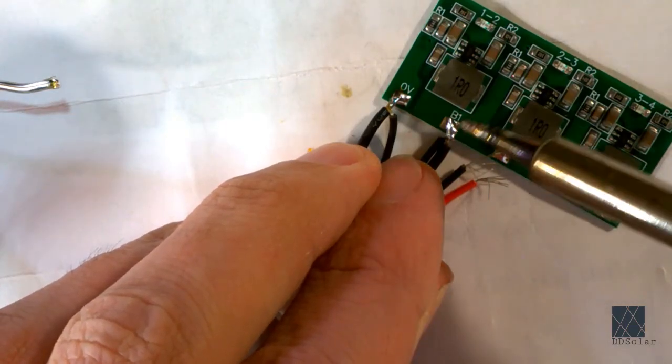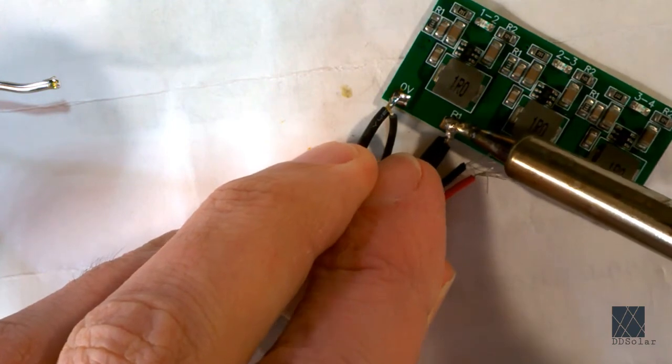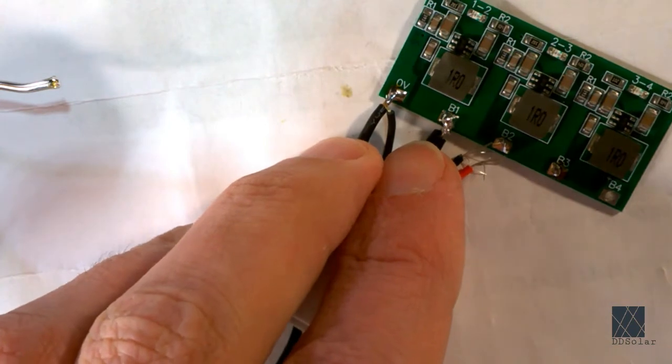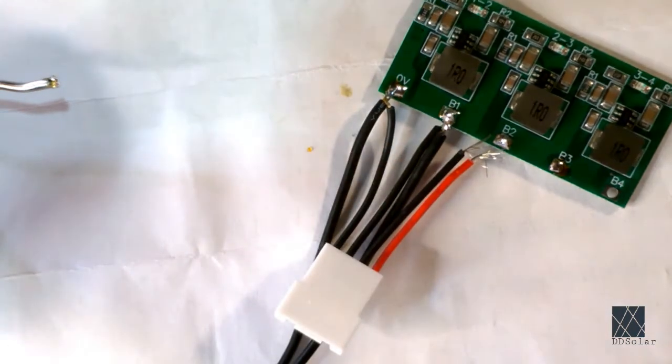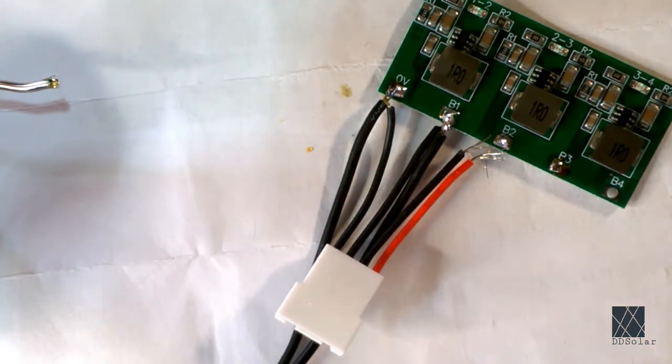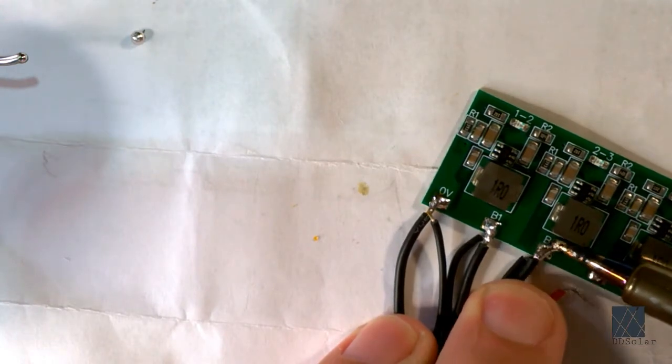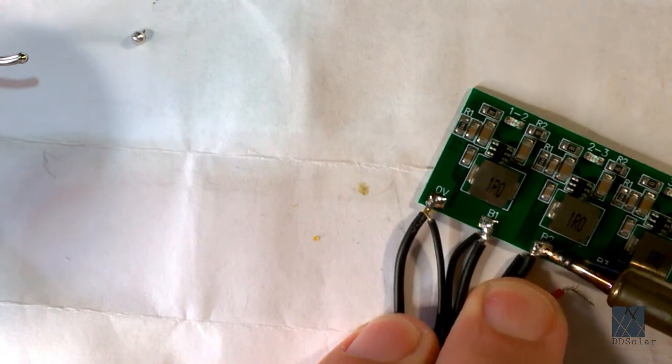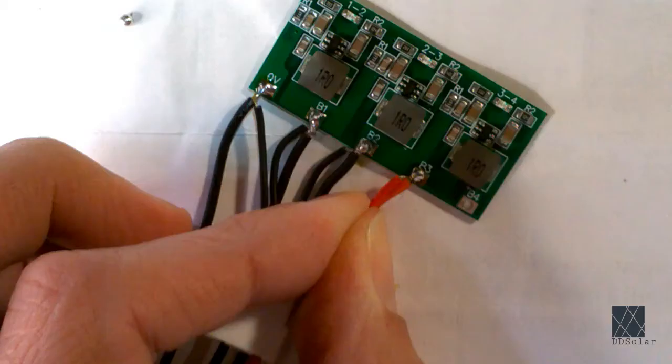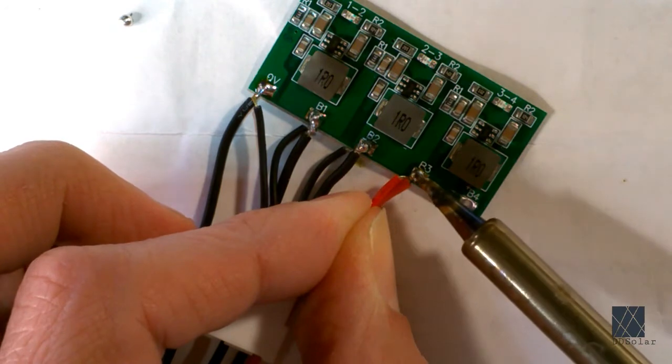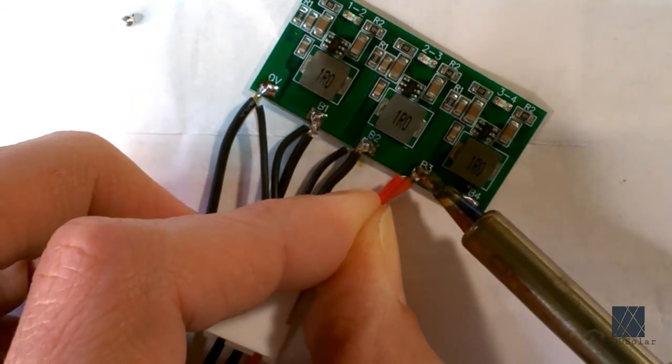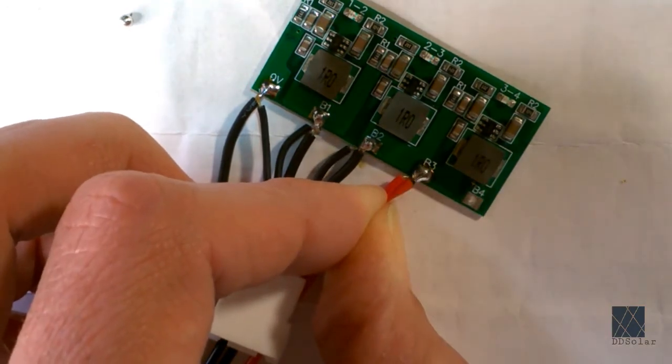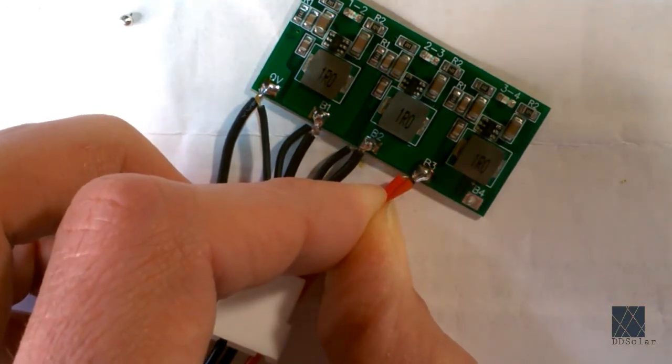And now this is the other end of the first cell. And I'm using a lot of solder because I have multiple wires here. And there's the most positive point of the pack.